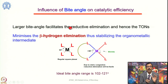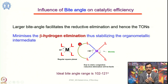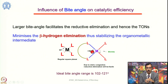Let us look into the influence of bite angle on catalytic efficiency. What is bite angle? When you use a bidentate ligand and it chelates to the same metal, the angle generated by these two donor atoms is called the bite angle, and the separation between the two donor atoms is called bite separation. If the bite separation is larger, the angle will also be larger. If we have a very bulky linker between two phosphorus atoms, the bite angle increases as a result of the increased bite separation.